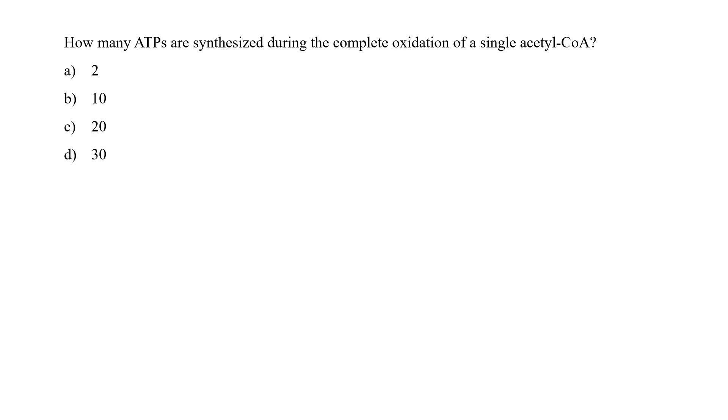How many ATPs are synthesized during the complete oxidation of a single acetyl-CoA? Whenever any acetyl-CoA which is generated and undergoes into the Krebs cycle, there are three NADH which are formed, one FADH2 is formed and one GTP is formed.